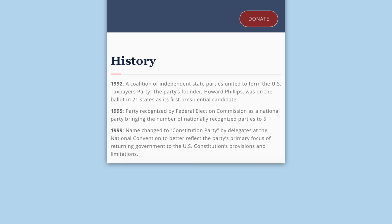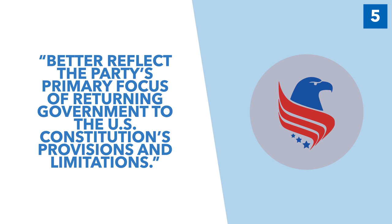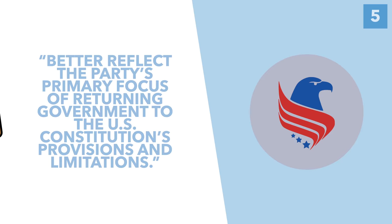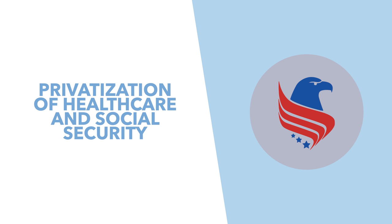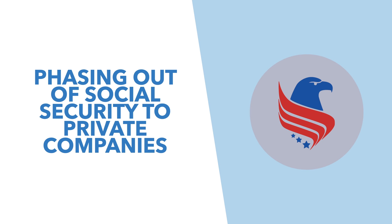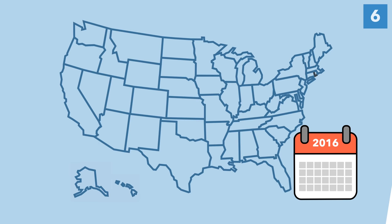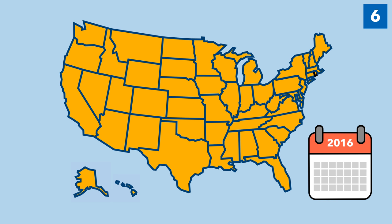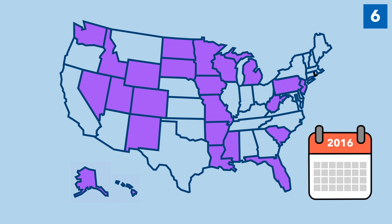According to their website, the Constitution Party was founded in 1992 as the US Taxpayers Party, and then changed its name in 1999 to better reflect the party's primary focus of returning government to the US Constitution's provisions and limitations. With regards to issues like education and drugs, the party believes that states should make those decisions and that the federal government does not have a role to play. The Constitution Party believes in the privatization of healthcare and social security, and advocates for the gradual phasing out of social security to private companies. The party has had more difficulty gaining a national profile, largely because of ballot access — in 2016, the Libertarian Party had ballot access in all 50 states, the Greens had 44 with write-in access in three further states, while the Constitution Party only had ballot access in 24 states, with write-in access in 22.